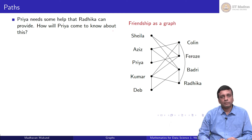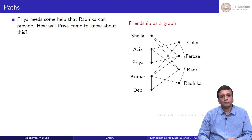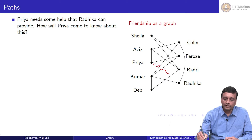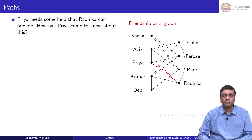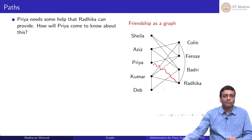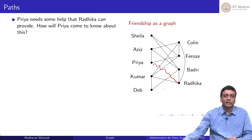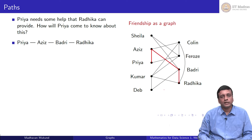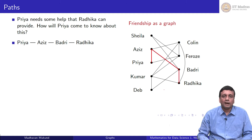What can we do with a graph other than just visualizing relationships? Suppose Priya needs some help and Radhika is in a position to provide it, but there is no direct connection between Priya and Radhika — they are not friends. In real life, when we have a problem, we reach out to friends and ask if they know somebody who could help. Priya could reach out to her friends Aziz and Firouz, and one of them can reach out to their friends, eventually hitting upon Radhika. One possible scenario: Priya told Aziz, Aziz told Badri, and Badri says he knows Radhika can solve the problem and puts Priya in touch with her. What we have constructed is a path — a sequence connecting Priya to Radhika even though there is no direct relationship between them.